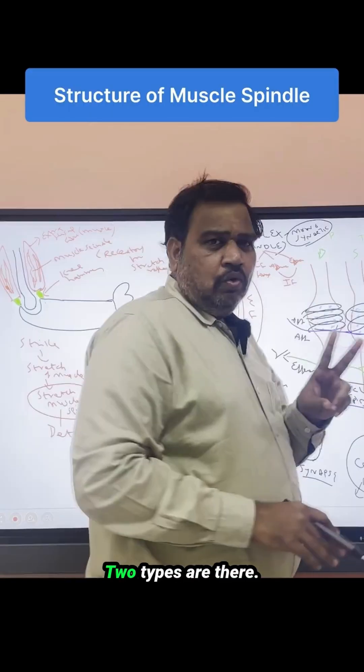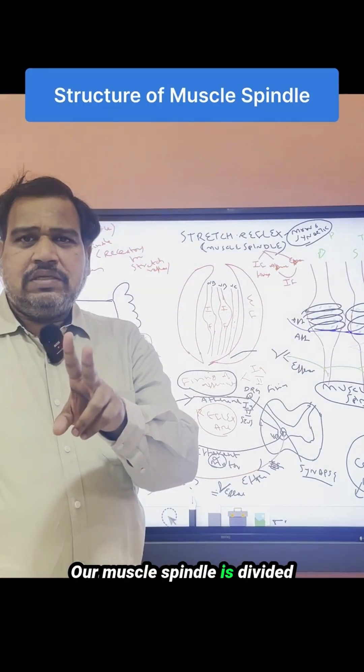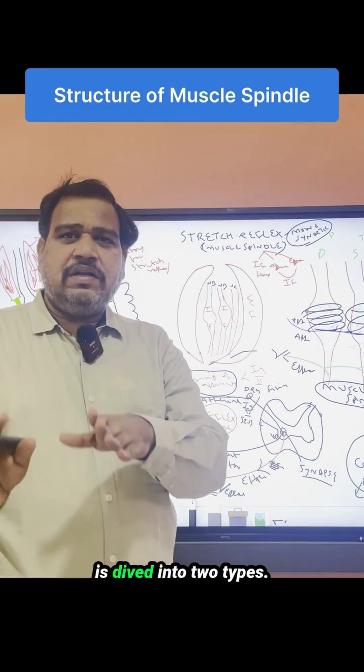Now, I am going to discuss the structure. Note it down. Two types are there. Our muscle spindle is divided into - our intrafusal fibers is divided into two types.